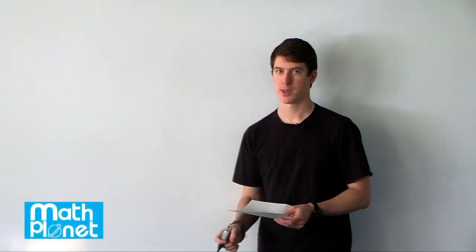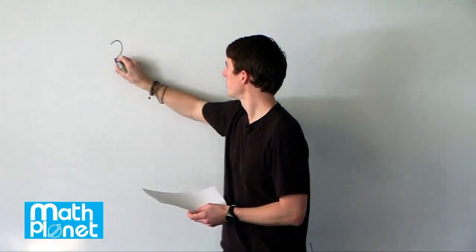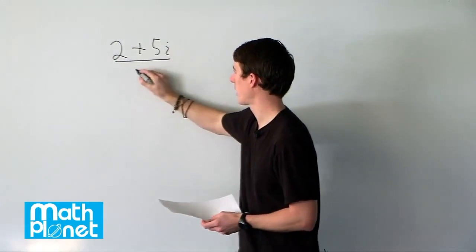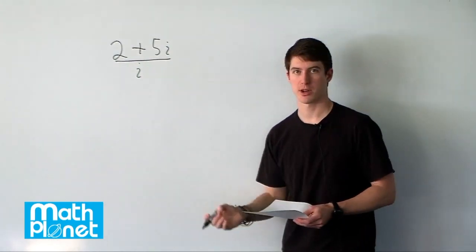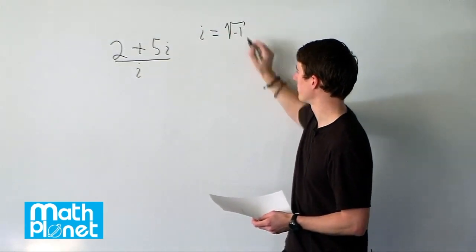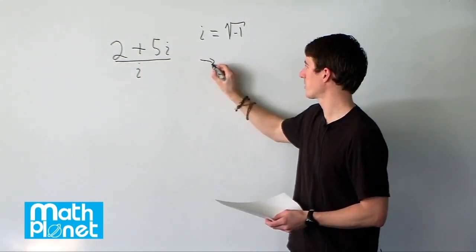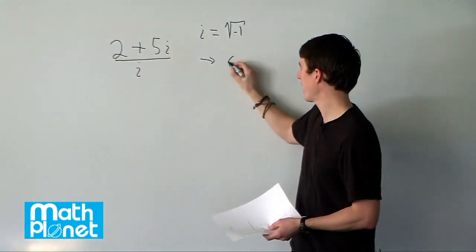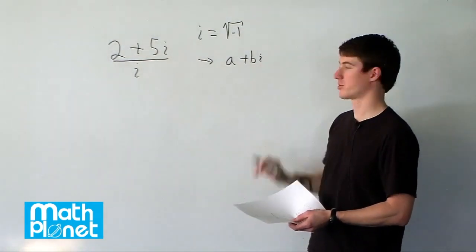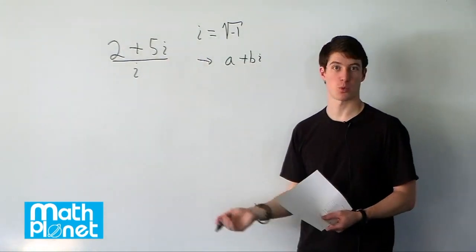Here we have a complex number that we want to write in a more common form. We have the complex number 2 plus 5i divided by i. Of course, i is the imaginary number where i equals the square root of negative 1. We want to write this in the normal form — some real numbers a and b, where a is all by itself and b is just multiplied by the imaginary number. So basically, what are a and b in this case? To do that, we need to get rid of the imaginary number in the denominator.